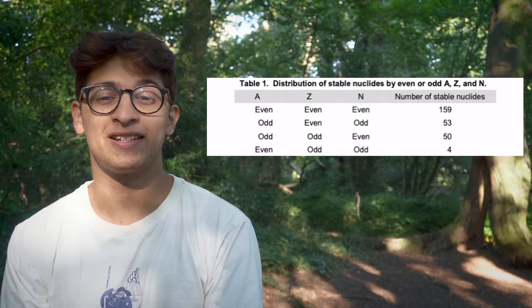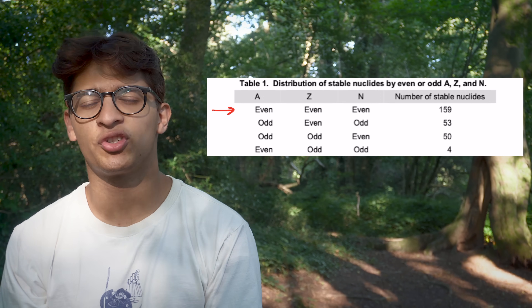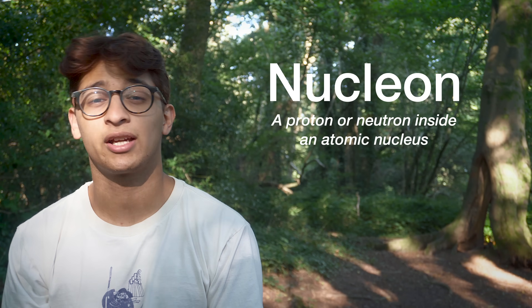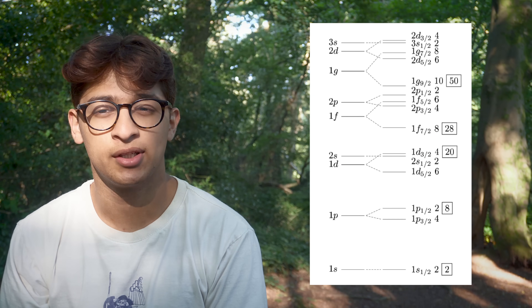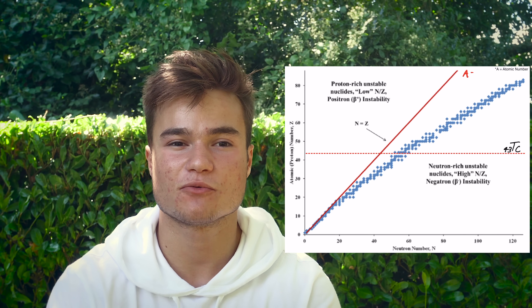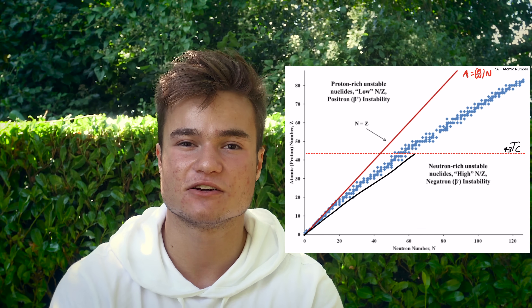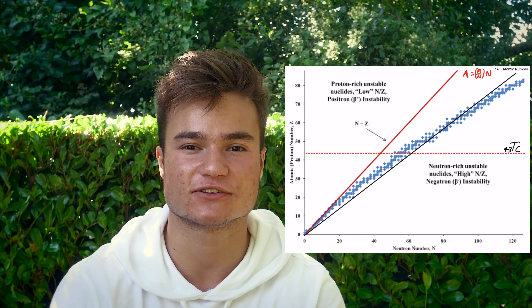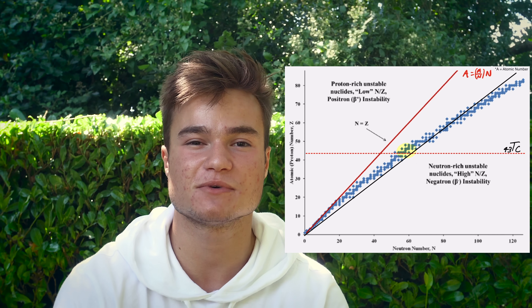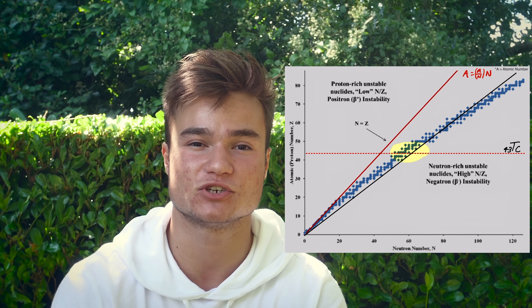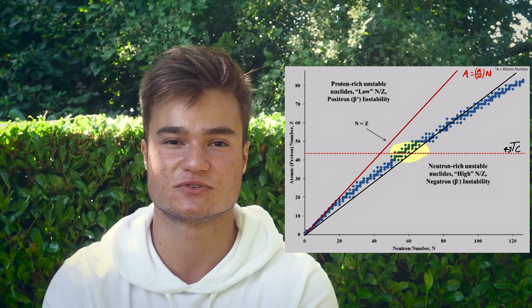This process generates a table where each stable isotope falls into one of four different categories. Further analysis of the stability of these even nuclides suggests the pairing of nucleons, like how electrons are paired in orbitals. From this, we've developed the nuclear shell model and the concept of magic numbers, but we won't go into that today. So why are there no stable technetium isotopes? From the chart, we can see that the valley of stability falls within a certain region.